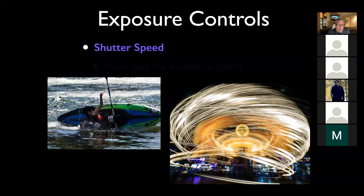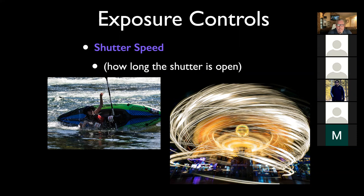There are a couple of different controls for exposure. Number one is shutter speed - how long is the shutter open? Like the picture of the kayaker where she's falling into the water - that's a really fast shutter speed. That's a very fast type of shutter speed concept.